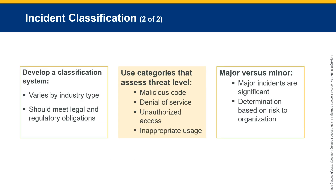Developing a classification system varies by industry and type and should meet legal and regulatory obligations. Use categories that assess threat level: malicious code, denial of service, unauthorized access, or inappropriate usage. Major incidents are significant and determination is based on risk to the organization, while minor incidents are part of normal operations.